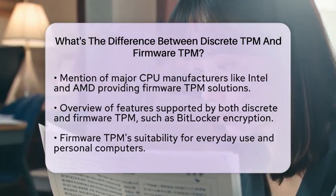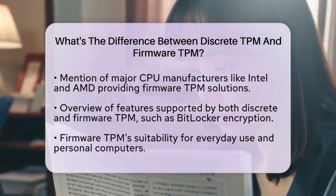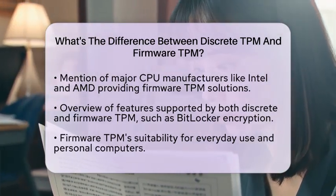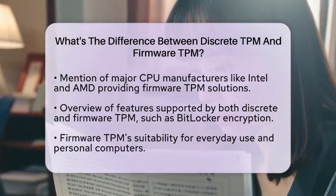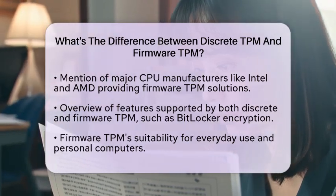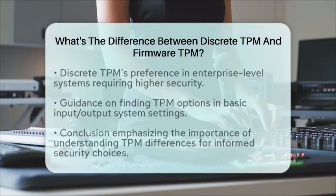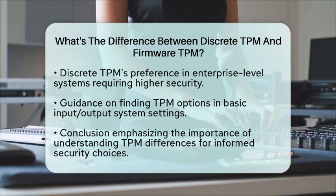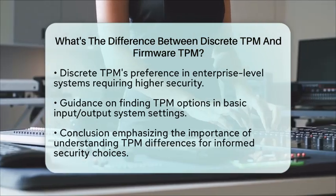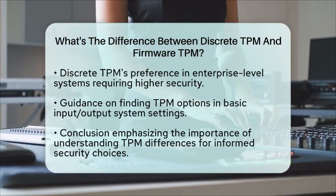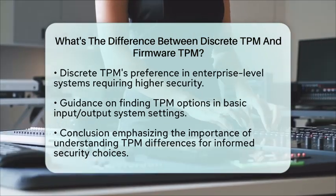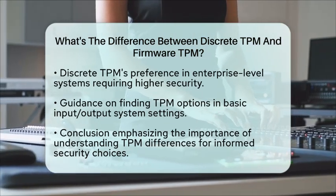Both discrete and firmware TPM support the same features, such as enabling BitLocker encryption and secure authentication. For most personal computers, firmware TPM provides sufficient security while keeping hardware costs down. However, for enterprise-level systems or environments requiring higher security assurances, discrete TPMs are the preferred choice.